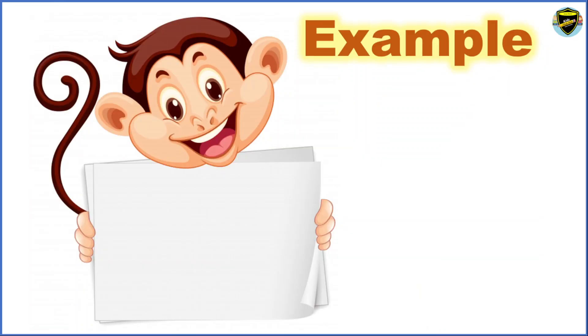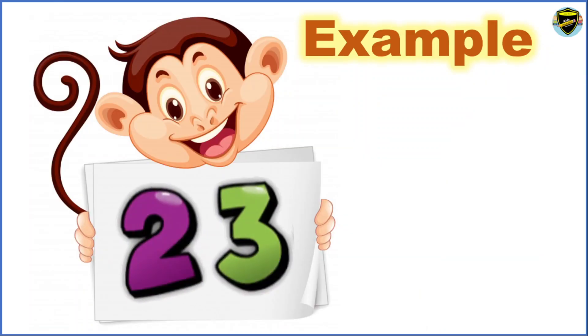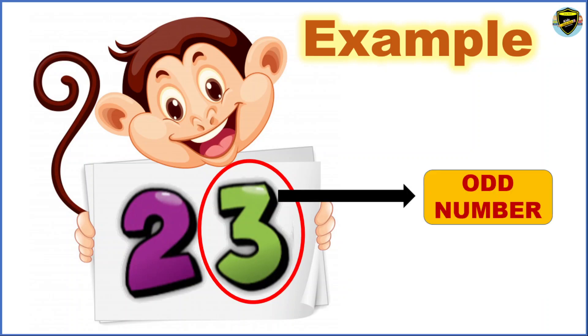Let us see an example. Number 23. Here, 3 is at the ones place and it is an odd number.